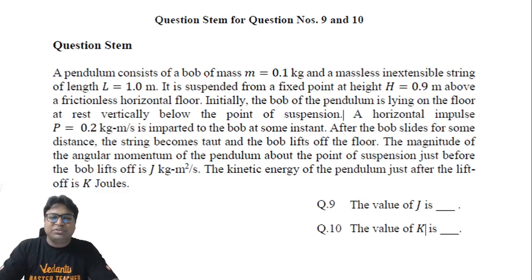Hello students, this is question number 9 and 10 of Paper 2 Physics of JEE Advanced 2021. The situation says that a pendulum bob of mass 0.1 kg is attached with a massless string of length 1 meter, suspended from a fixed point at a height of 0.9 meter above a frictionless horizontal floor.